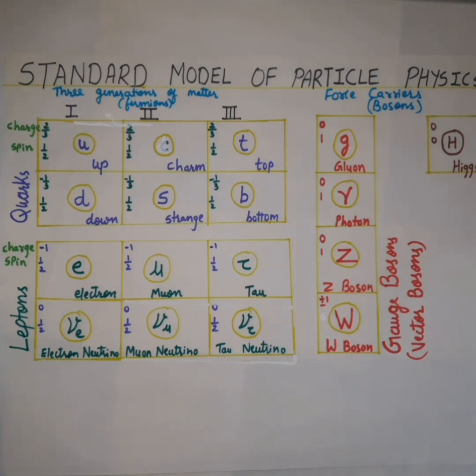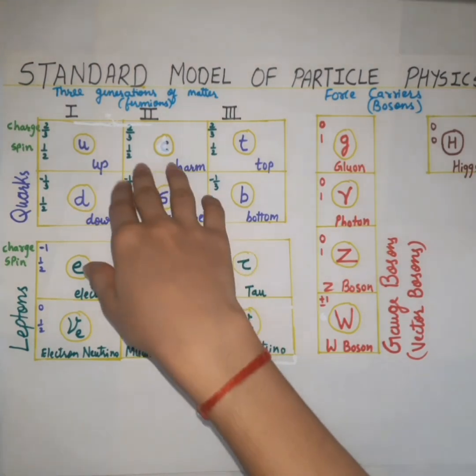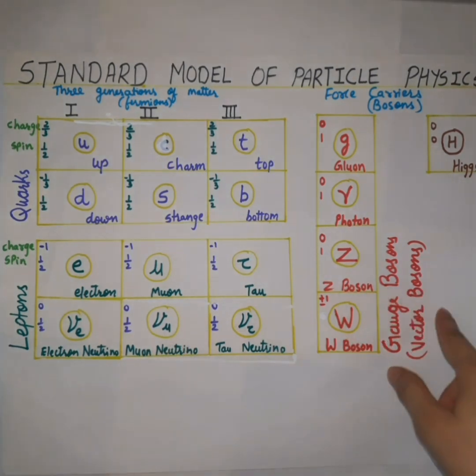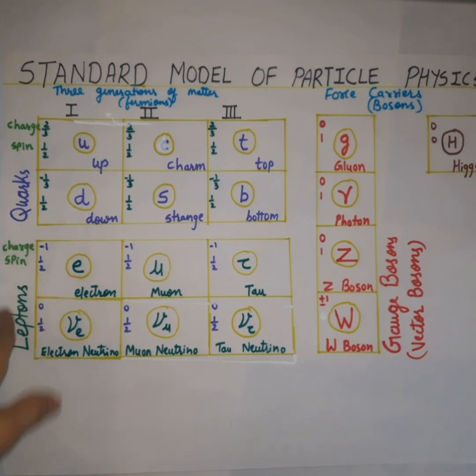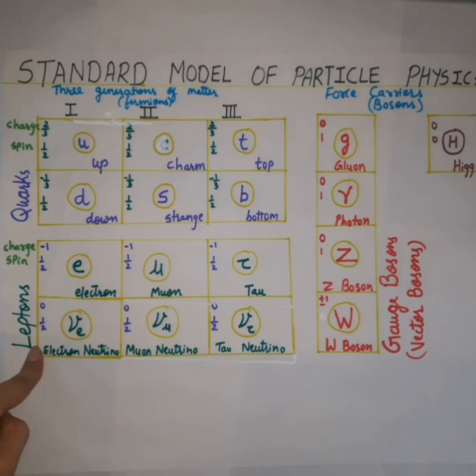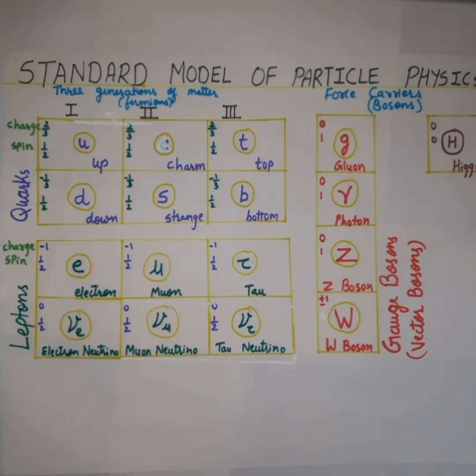This is the standard model of particle physics. On the left hand side, we have all the matter particles, and on right side, we have the force carriers. Matter particles occur in two groups: first, quarks, and the second one is leptons. The lightest and the most stable particles make up the first generation, whereas the heavier and less stable particles belong to second and third generation. All the stable matter in the universe is made from particles that belong to the first generation. Any heavier particles quickly decay into the more stable ones.